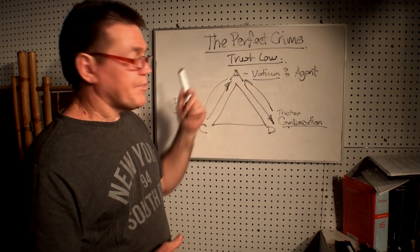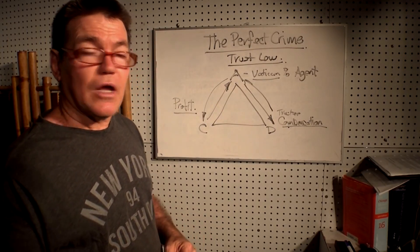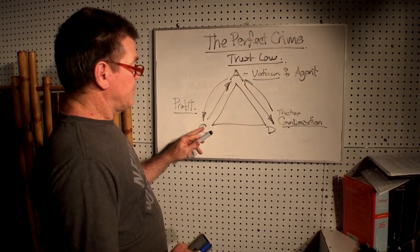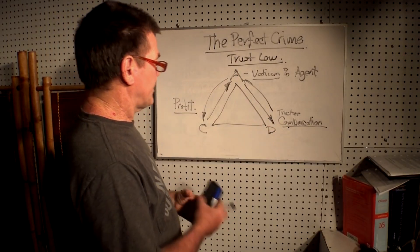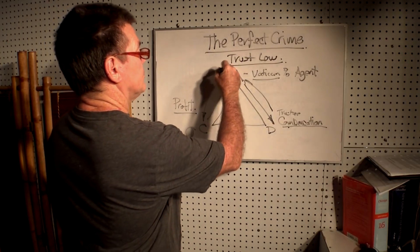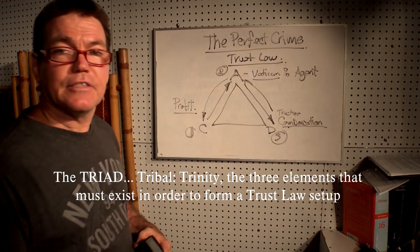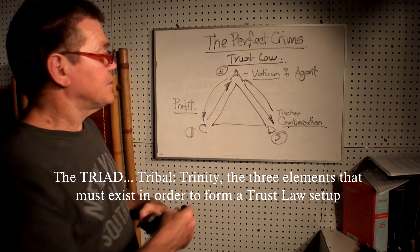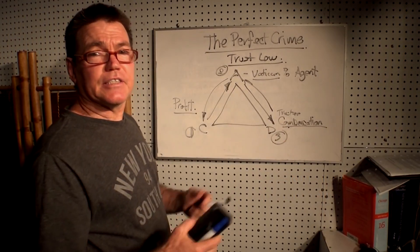Now that you know the truth about the trust, you should be able to detect the lie. There is a creditor, an administrator, and a debtor — one, two, three parties. That makes up the trinity of the trust. That's the key.